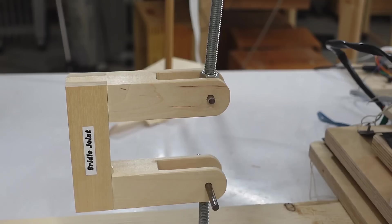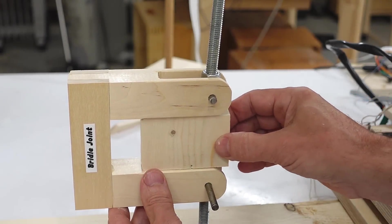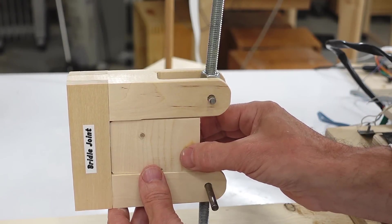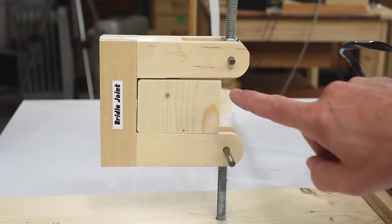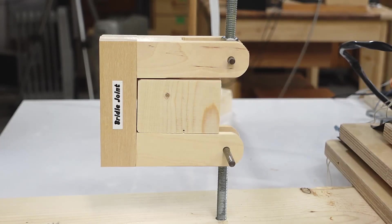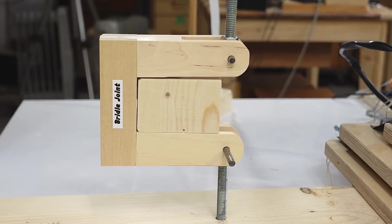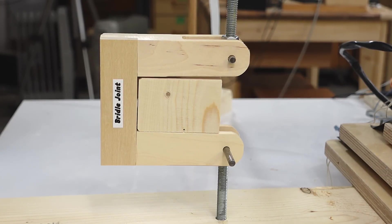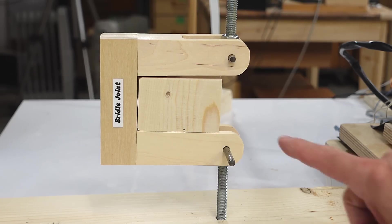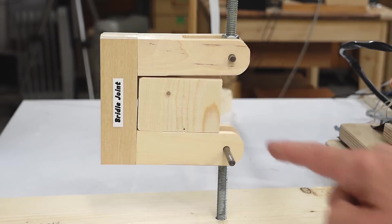Next up, a bridle joint and I wanna see better how much this flexes so I'm just gonna stick this piece of wood in here that'll make that more obvious. At 50 kilograms, it hasn't opened up much. 80, 90, 100.